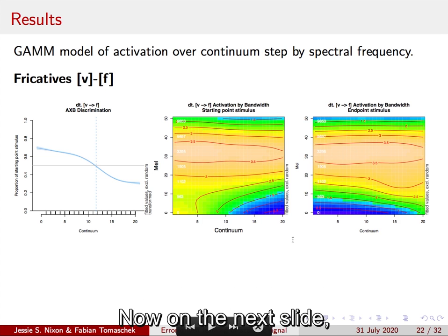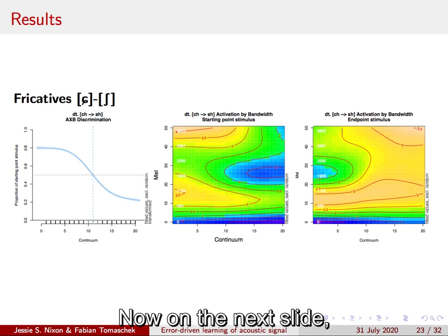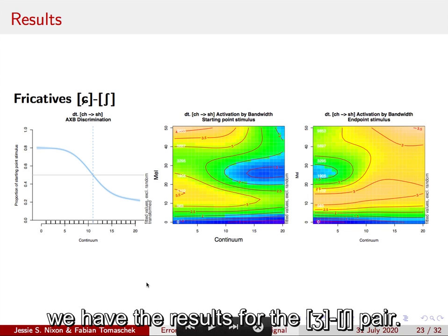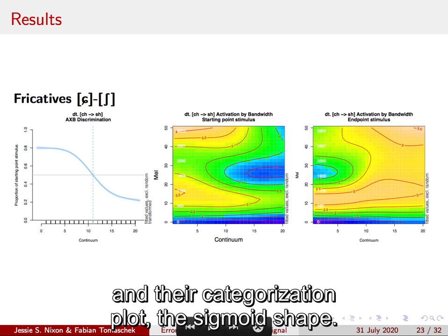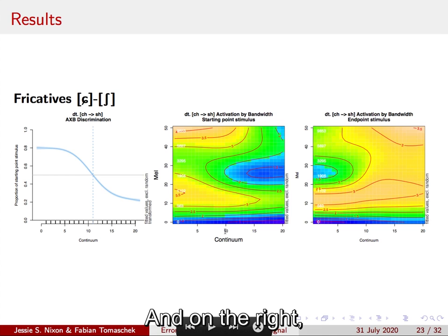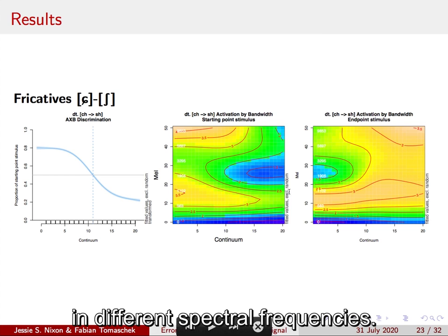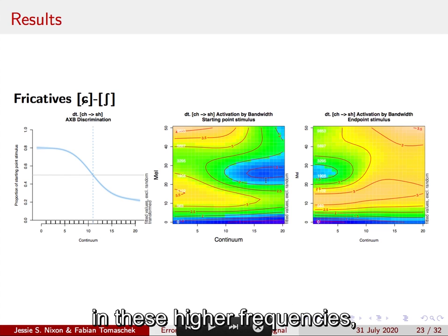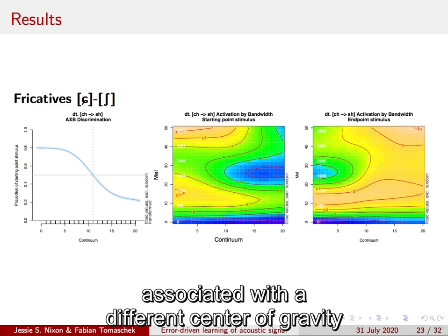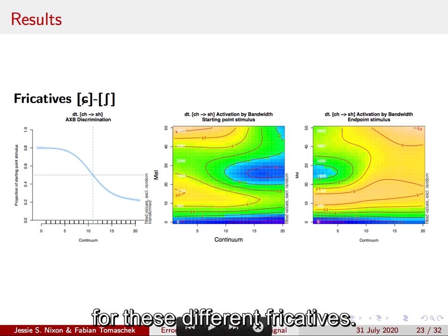Now on the next slide we have the results for the sh-zh pair. We see the same basic shape on the left in the categorization plot, the sigmoid shape, and on the right we see that the effects occur in different spectral frequencies. Here the change across the continuum occurs in these higher frequencies associated with a different center of gravity for these different fricatives.